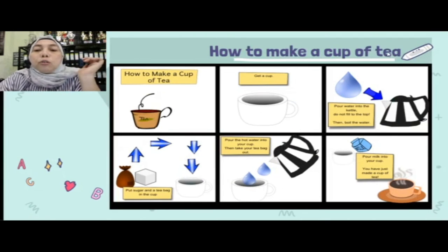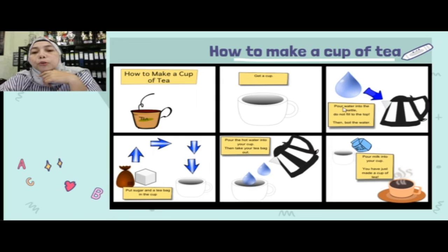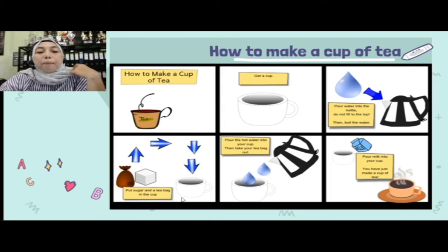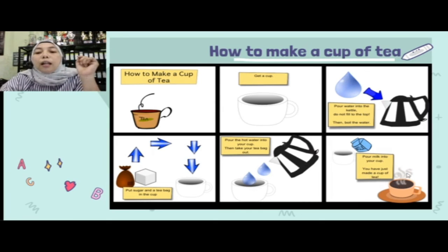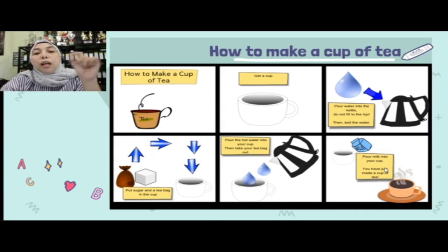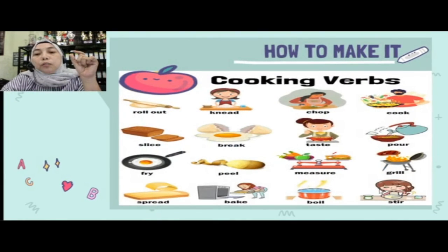Contoh pertama: how to make a cup of tea. First, get a cup. And then pour water into the cup. Put sugar and a tea bag into the cup. Pour the hot water into your cup. Then pour milk into your cup if desired. Stir the tea. And then you have just made a cup of tea.